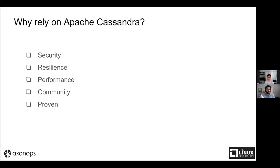Cassandra is proven - it's being used in some of the biggest database deployments in the world. Apple has around 200,000 nodes, Netflix is running tens of thousands of nodes, and banks, insurance, oil and gas, and the energy sector are all running Cassandra. It's amazing tech and it just keeps getting better.